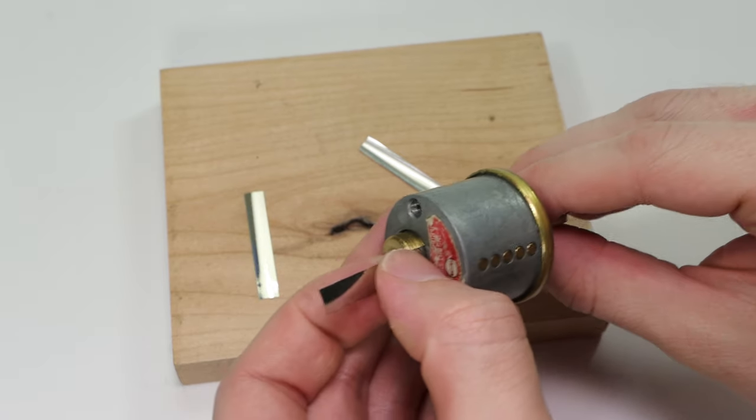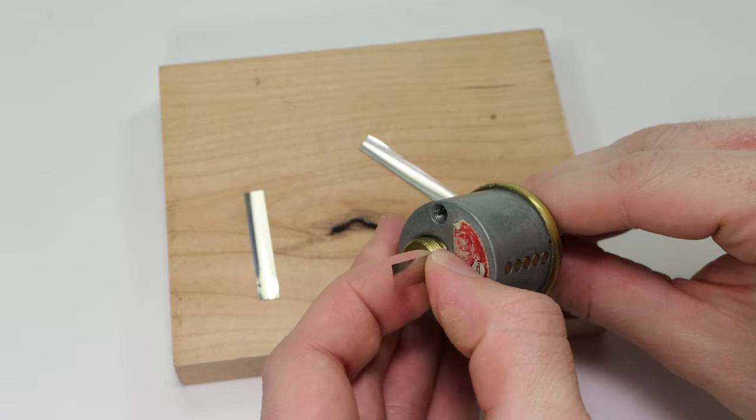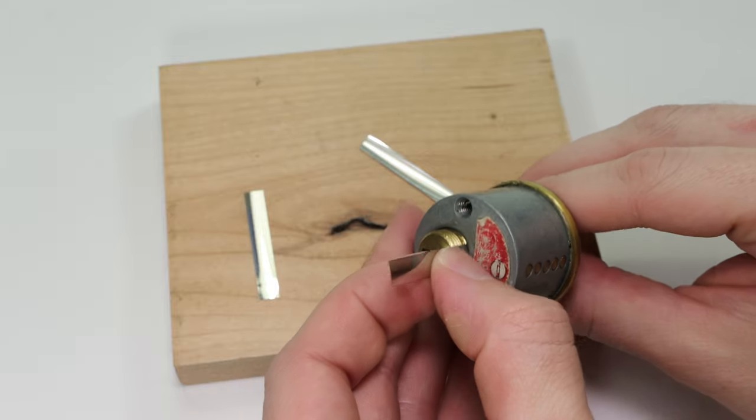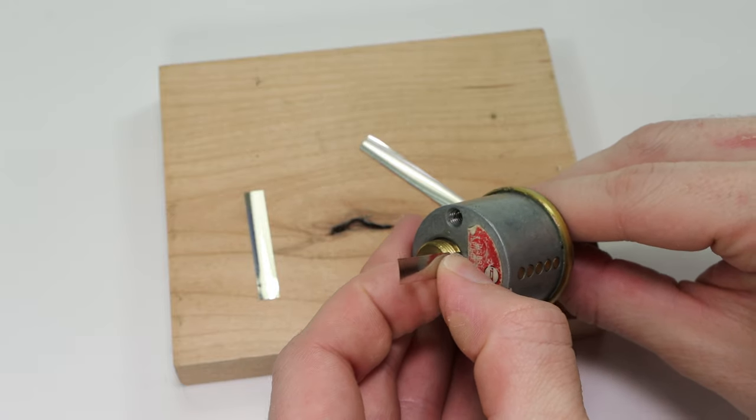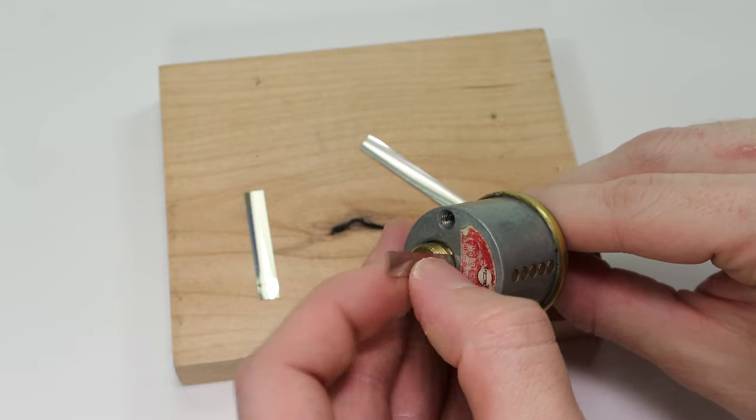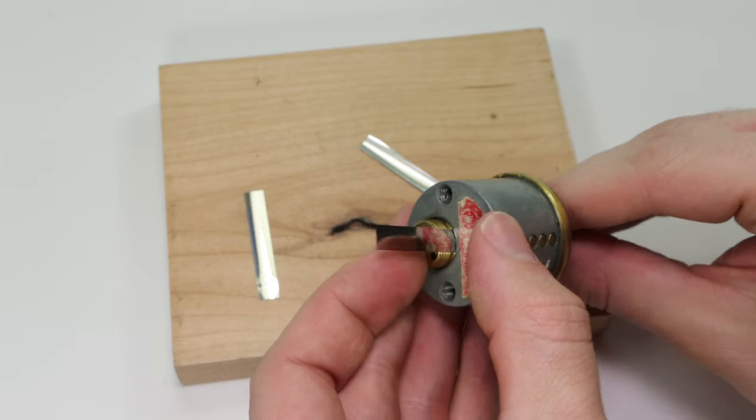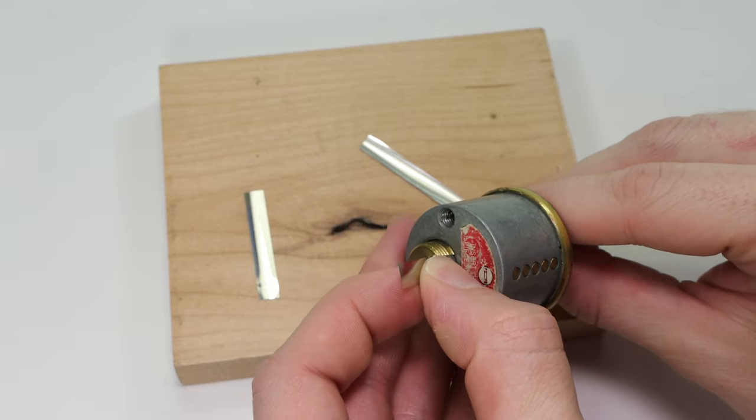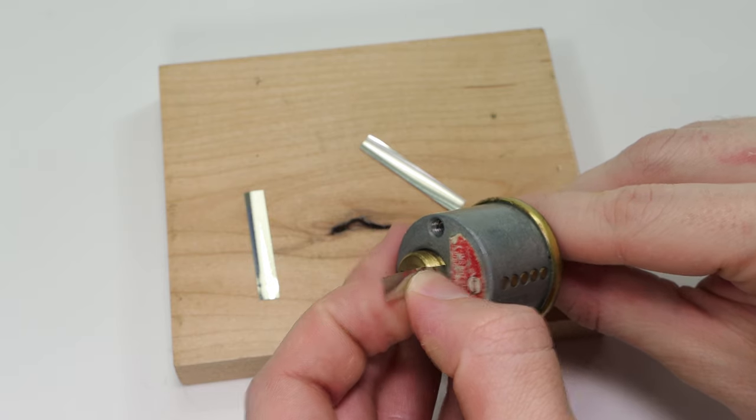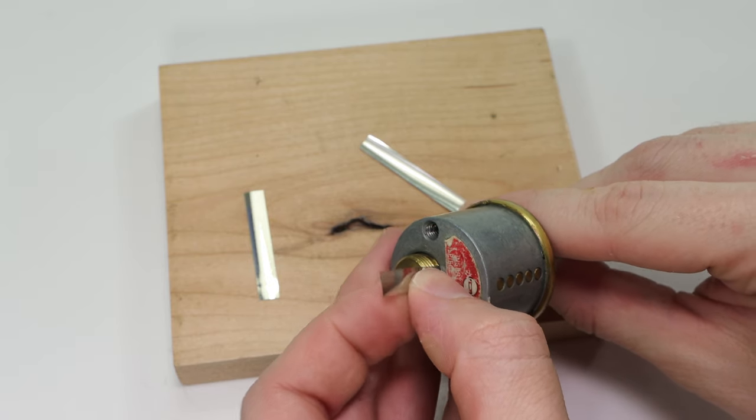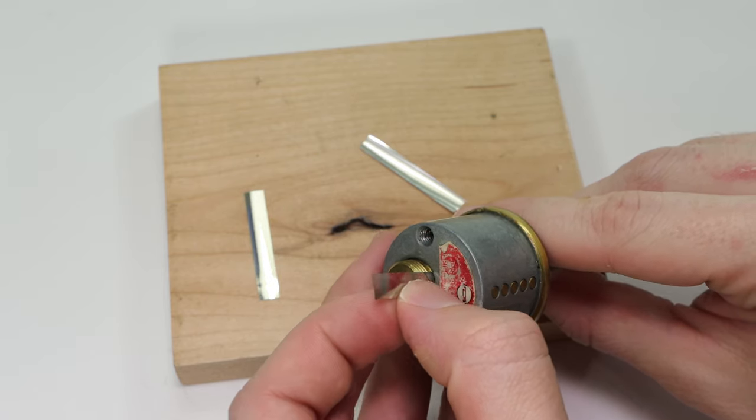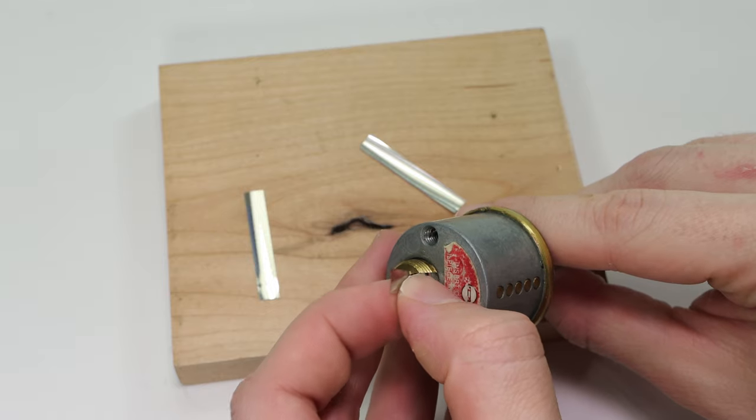And what you're doing is you're wedging between the key pins and the driver pins. And you're making a little gap so that once you get all the way across, nothing is going to actually be blocking plug rotation because the core shim is going to be essentially making a shear line for you. And then you'll be able to get the lock opened up.